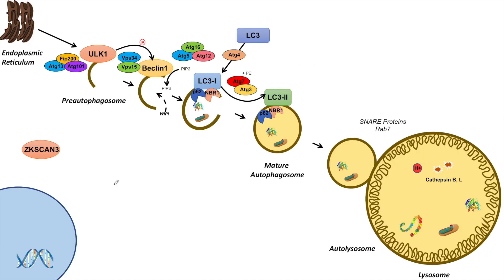Here is the macroautophagy pathway. The first transcriptional repressor I want to talk about is ZAXSCAN3, and we can think of ZAXSCAN3 as being the opposite of TFEB. With TFEB, during the fed state it resides in the cytosol, and during a fasting state TFEB enters the nucleus. But it's the opposite with ZAXSCAN3 — during a fasting state ZAXSCAN3 is in the cytosol, but during a fed state ZAXSCAN3 enters the nucleus.